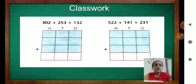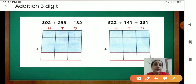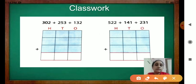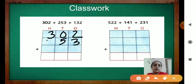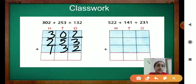Now this is your classwork. Write down the numbers in the proper places. Start writing — after that I will do it. Copy down: 302 plus 253 plus 132. So 2, 0, 3 from the 1s place. Then 253: 3, 5, 2. Then 132: 2, 3, 1.